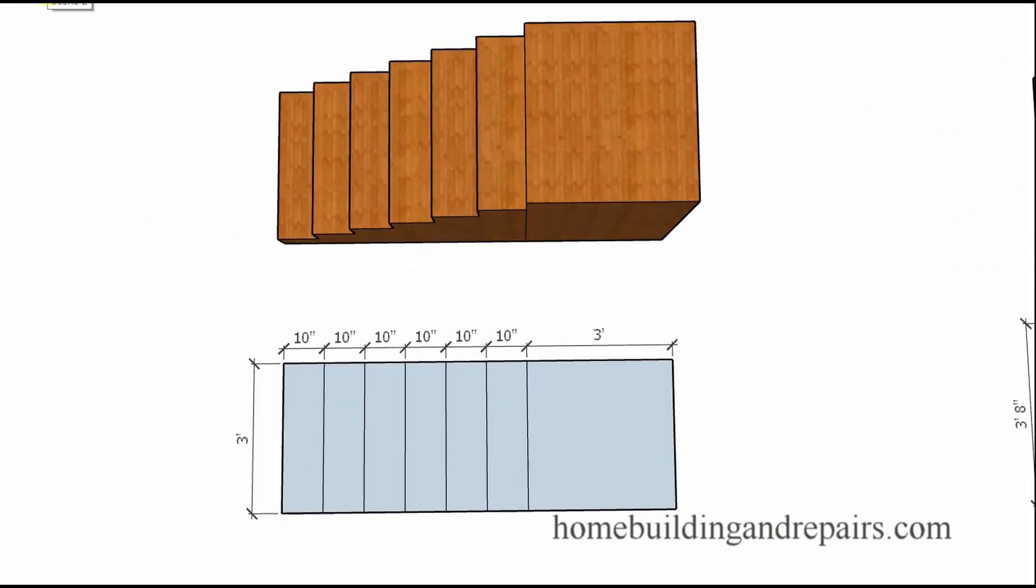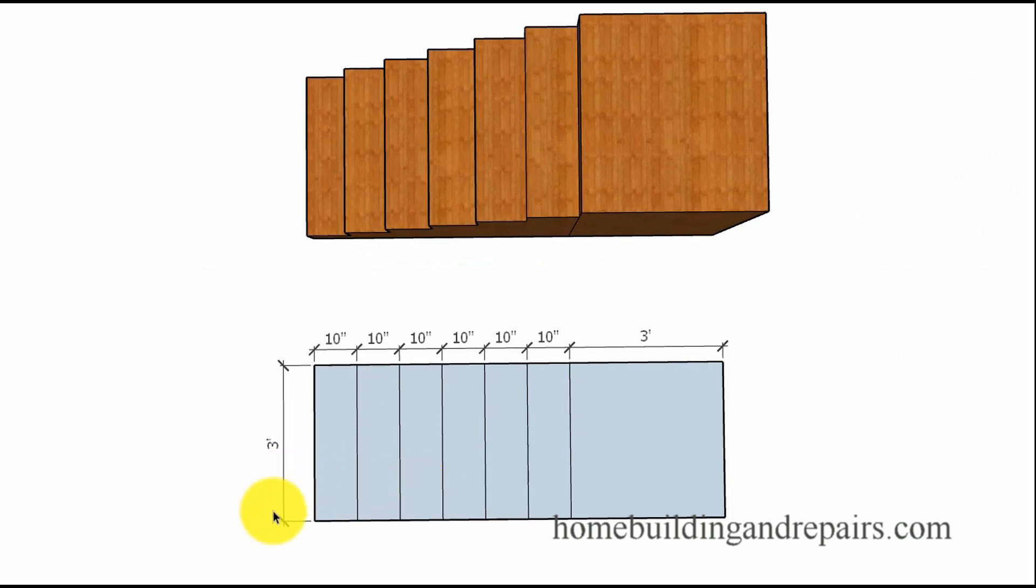Three foot wide minimum tread or stair width. This is the entire stairway. If you build a stairway where you're going to have a section that's larger and smaller, maybe larger at the bottom, smaller at the top, this is going to have to be the minimum for that. Tread depth, 10 inches. It can be larger than 10 inches, just cannot be smaller than 10 inches.